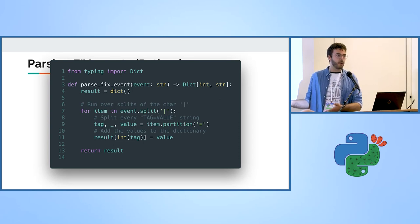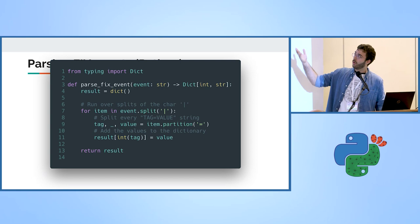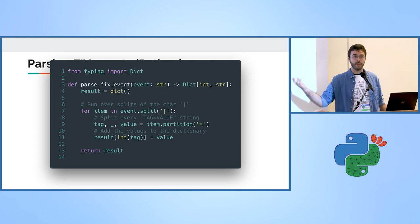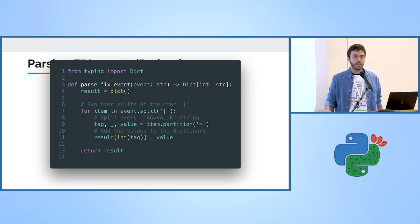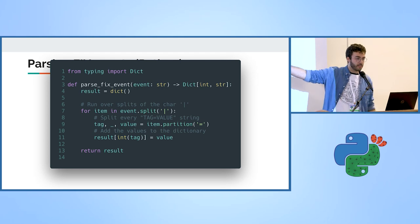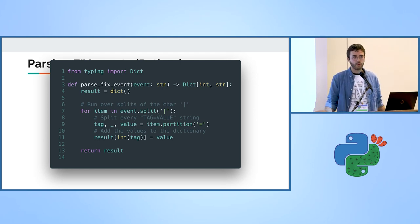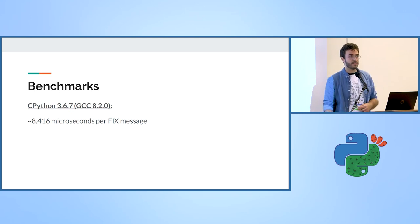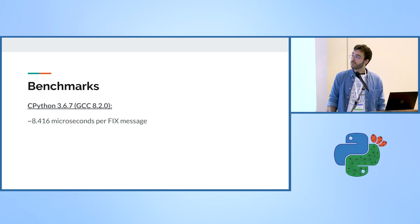Looking at some code from my FIX parser: I get a FIX message, split it by the special character, and for each split I also split to get the tag and value, returning a dictionary. A small note — I use partition and not split on line nine because I benchmarked it and partition worked better for this specific text. That's really easy, elegant, simple and understandable. I benchmarked it, started writing my services in CPython, and the performance was almost nine microseconds per FIX event.